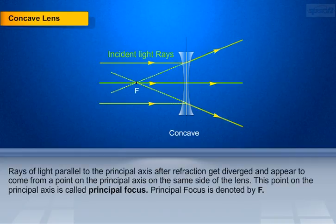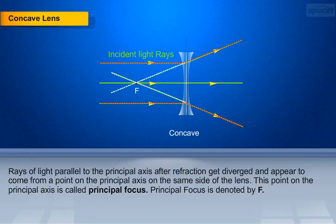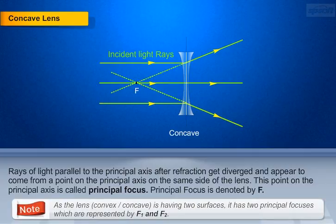Rays of light parallel to the principal axis, after refraction, get diverged and appear to come from a point on the principal axis on the same side of the lens. This point on the principal axis is called the principal focus of the concave lens. Principal focus is denoted using the letter F. Since a concave or convex lens has two surfaces, it has two principal focuses, represented by F1 and F2.